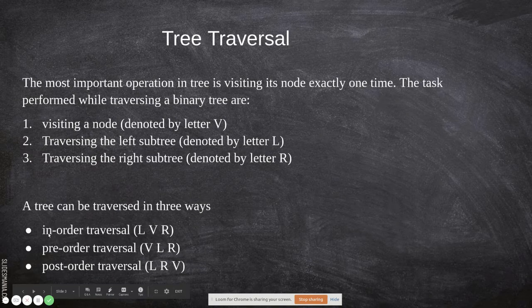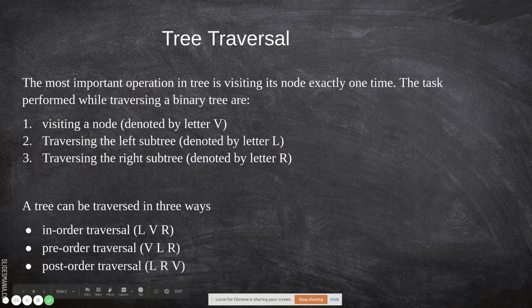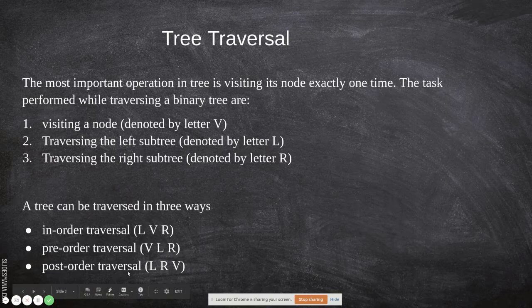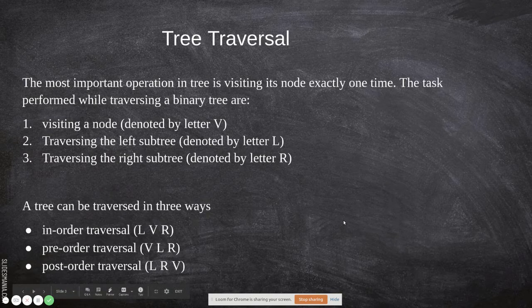In in-order traversal, the left subtree is visited first, then the parent, then the right subtree. In pre-order traversal, the parent is visited and printed first, then its left, then its right. In post-order traversal, the left subtree is visited first, then the right subtree, and finally the parent node is printed.